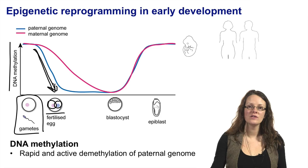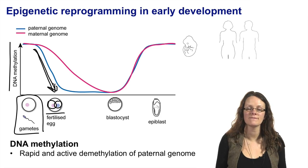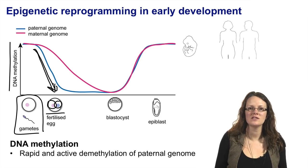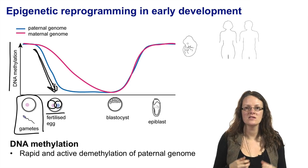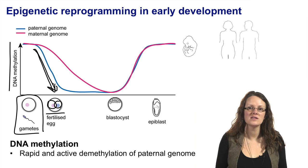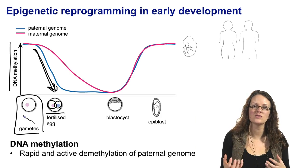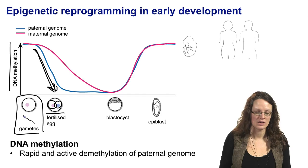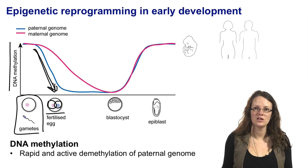We now know that this DNA demethylation occurs via hydroxylation. Demethylation is incredibly difficult to achieve chemically because you have a very strong carbon-carbon bond, so there is not a simple snipping off of that methyl group — the CH3 group. Instead, what happens is that the bond is destabilised through hydroxylation, and then the hydroxyl group is demethylated. This is what happens early in development on the paternal genome.